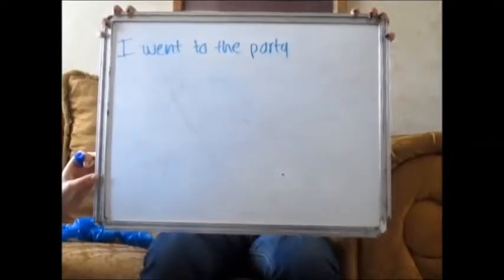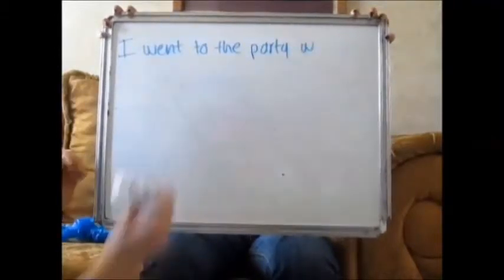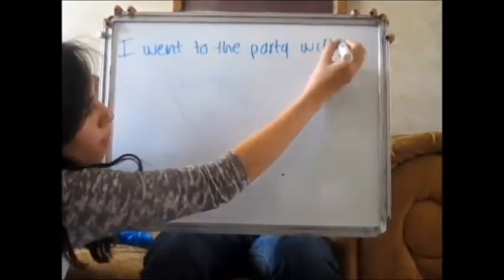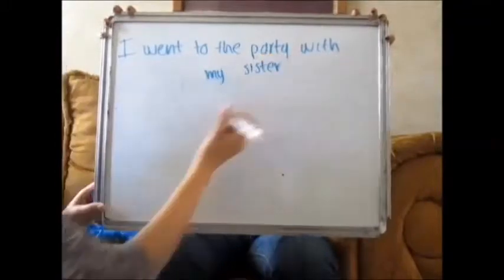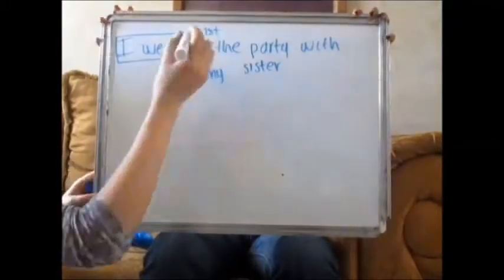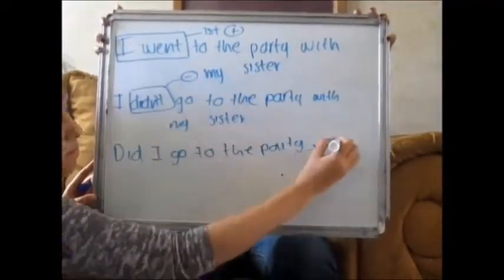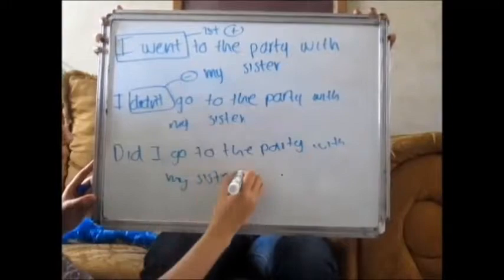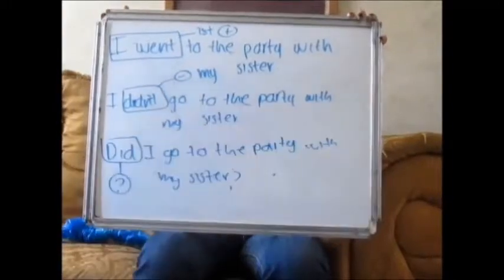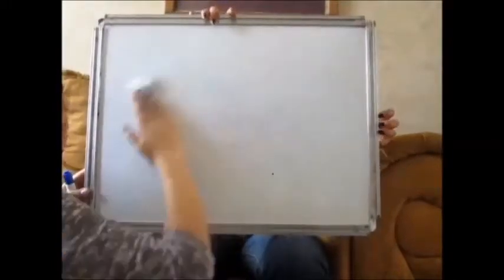The example with first person is: I went to the party with my sister. In the negative form: I didn't go to the party with my sister. And the interrogative is: did I go to the party with my sister?